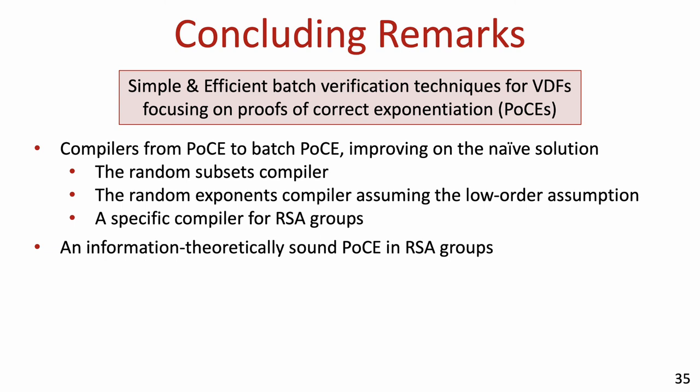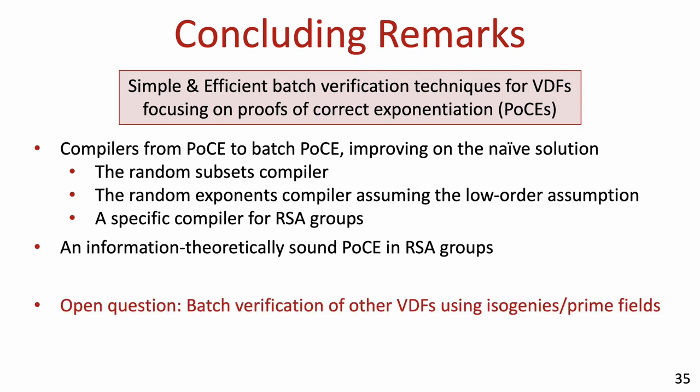In conclusion, we saw simple and efficient batch verification techniques for VDFs, focusing on proofs of correct exponentiation. We presented two compilers — the random subset compiler which works in any group, and the random exponents compiler that assumes the low-order assumption — both improving upon the naive solution. We also showed how to import the random exponents compiler to safe prime RSA groups and presented an information-theoretically sound POCE in these groups. An interesting open question is to devise batch verification techniques for other VDFs that do not rely on repeated squaring, like isogeny-based constructions or constructions in prime fields. Thank you for listening.